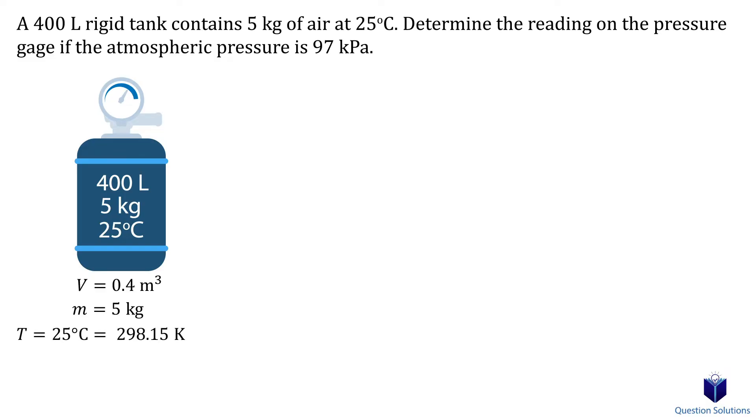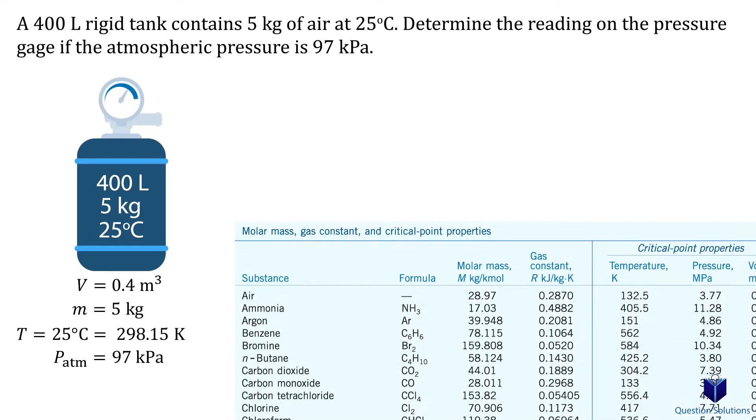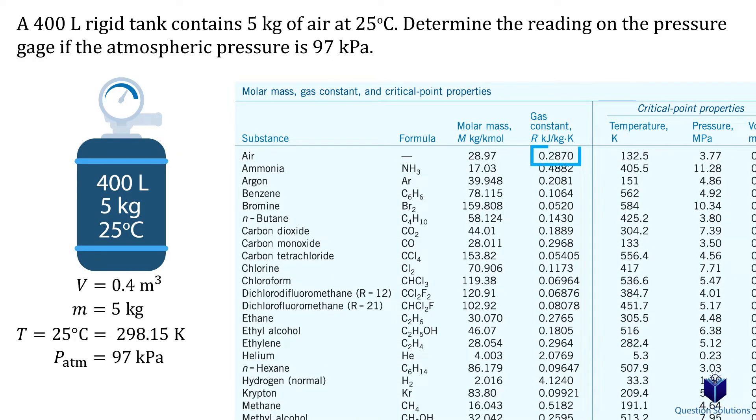The temperature is 25 degrees Celsius, which is 298.15 Kelvin, and the atmospheric pressure is 97 kilopascals. We also need to look at our table to find the gas constant of air. So that's right here.